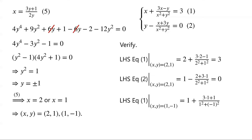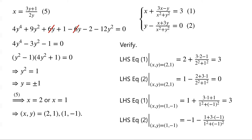For (x, y) = (1, negative 1), the left-hand side of equation 2 equals 1 minus (1 plus 3·(negative 1))/(1 squared plus (negative 1) squared), which equals the right-hand side. So (x, y) = (2, 1) and (x, y) = (1, negative 1) are both solutions of the original system of equations.